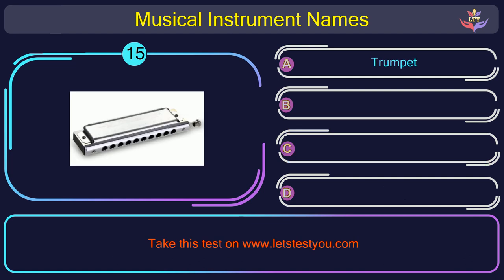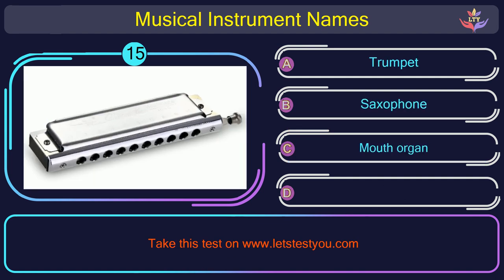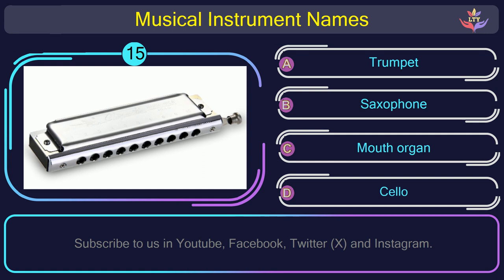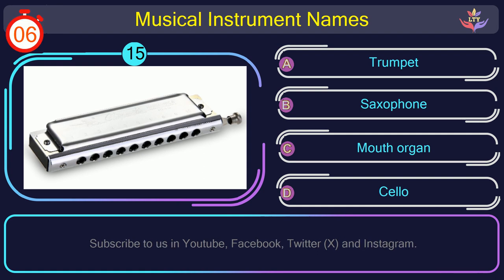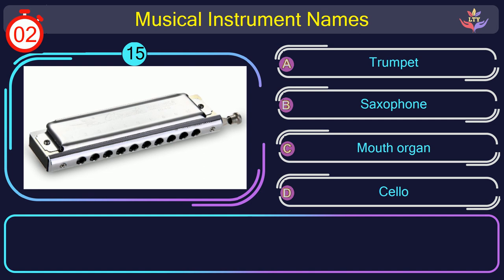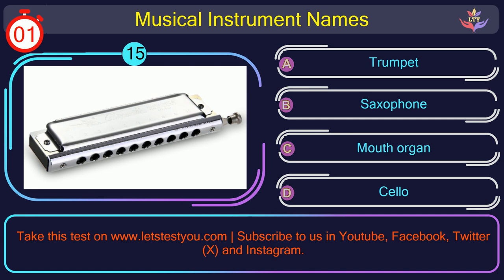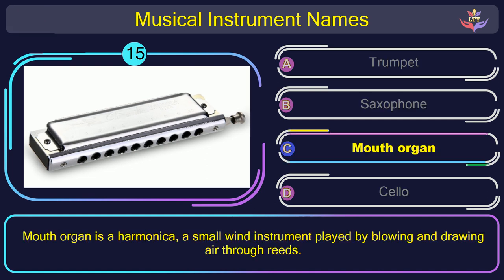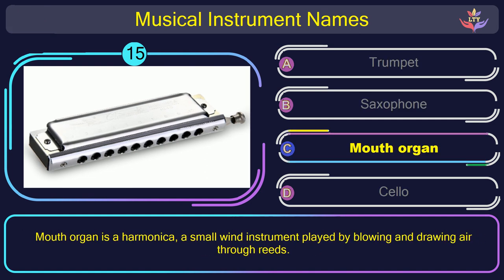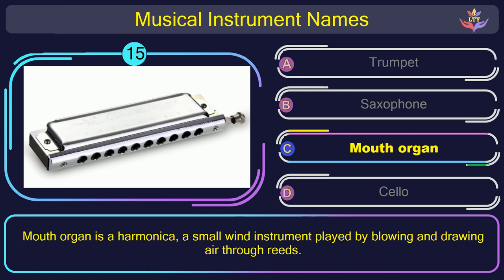Question number 15. What is the name of the musical instrument in this picture? The correct answer is option C: Mouth organ. Mouth organ is a harmonica, a small wind instrument played by blowing and drawing air through reeds.